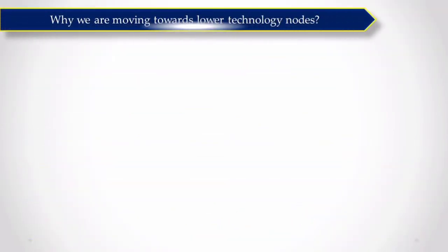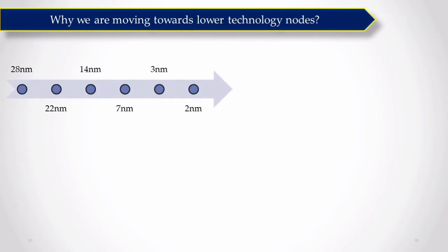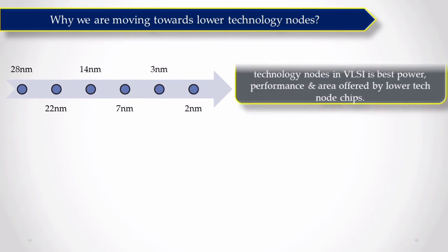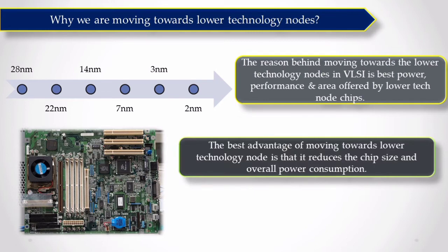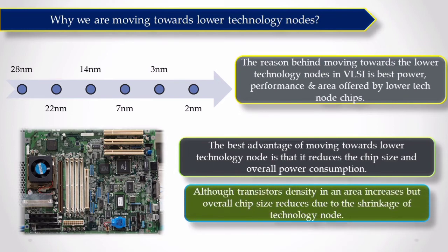So chip industry always moves towards lower technology nodes because lower technology nodes offer a lot more advantage compared to its previous version. In terms of leakage power area, lower technology nodes offer more advantage. You might have heard that in a very small chip, there are billions of transistors. So that is only possible because we are moving towards smaller technology nodes which offers that in a small area, you can include many transistors and the efficiency of that chip will be higher.